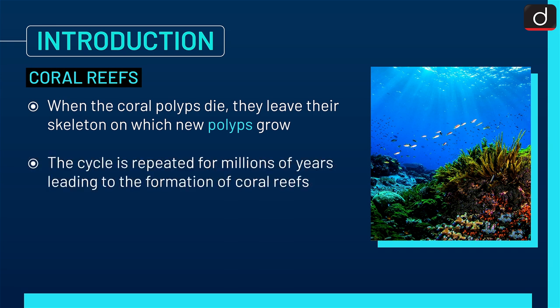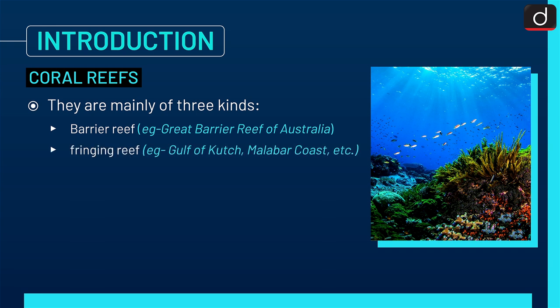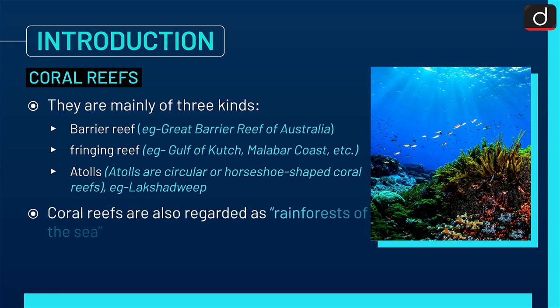The cycle is repeated for millions of years, leading to the formation of coral reefs. They are mainly of three kinds: barrier reef (example: Great Barrier Reef of Australia), fringing reef (example: Gulf of Kutch, Malabar Coast), and atolls — circular or horseshoe-shaped coral reefs, for example Lakshadweep. Coral reefs are also regarded as the rainforests of the sea.